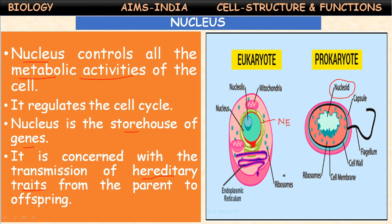What is the membrane covering the nucleus called? It is the nuclear envelope or nuclear membrane. It is very similar to the cell membrane. Almost the entire genetic material of the cell is found in the nucleus in the form of chromatin material.